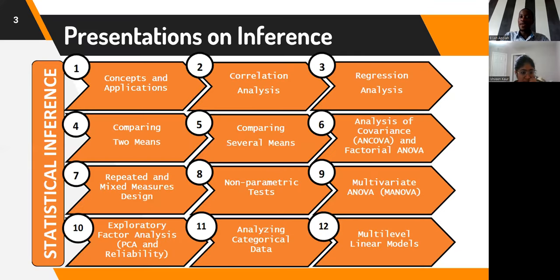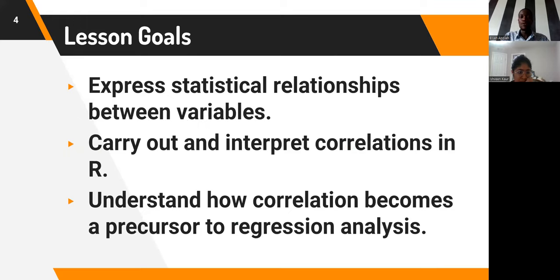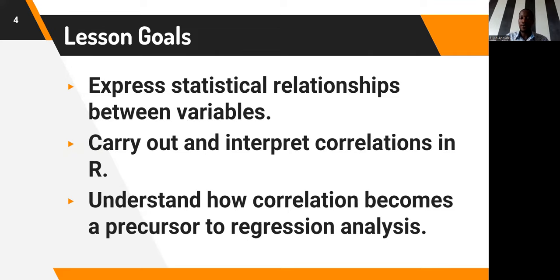As part of the statistical inference lecture series, we have 12 series, and we've already covered the very first one, which had to do with concepts and applications. For today, we are going to look at correlation analysis. The goals for this lesson are to be able to express statistical relationships between variables, carry out and interpret correlations in R, and understand how correlation becomes a precursor to regression analysis.